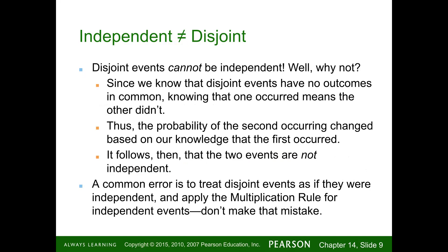The clues will be given to you in the problem. Disjoint events cannot be independent. Since disjoint events have no outcomes in common, knowing that one occurred means the other didn't — so the probability of the second occurring changed based on knowledge of the first. It follows that two disjoint events are not independent. A common error is to treat disjoint events as if they were independent and apply the multiplication rule for independent events — don't make that mistake.